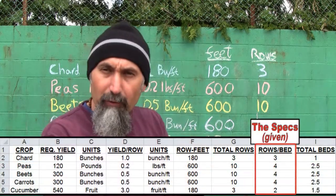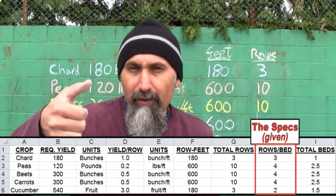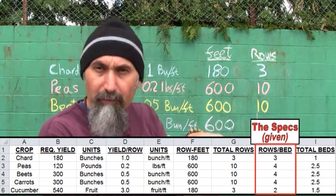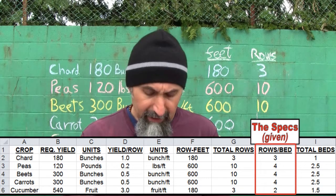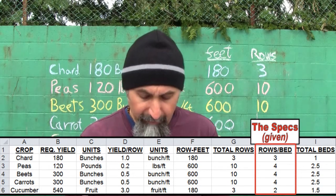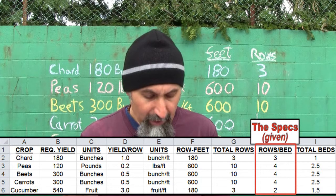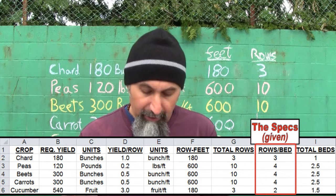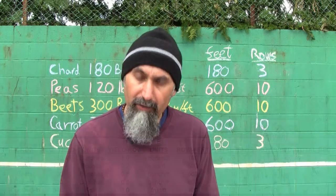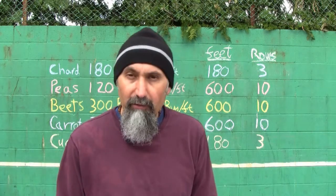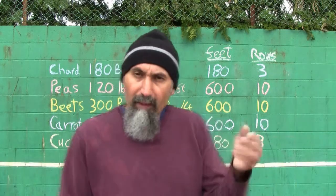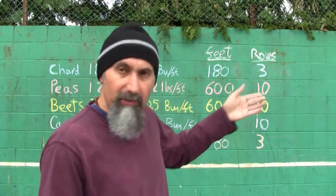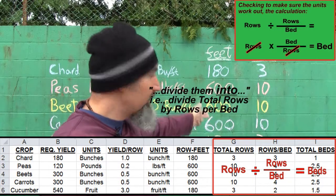The way we set up our section is based on how many rows we can get per bed, because our total bed width is only five feet and there's only a certain number of rows we can get per bed. The specs for those items are: three rows of chard per bed, four rows of peas per bed, four rows of beets per bed, four rows of carrots per bed, and two rows of cucumbers per bed.